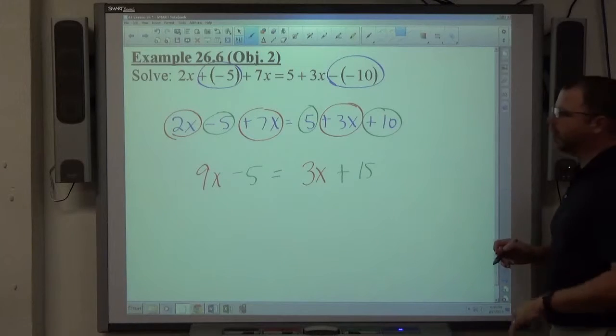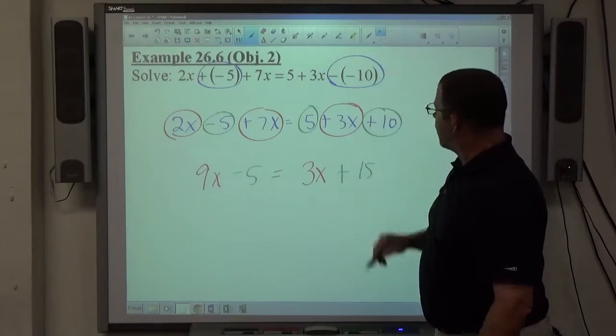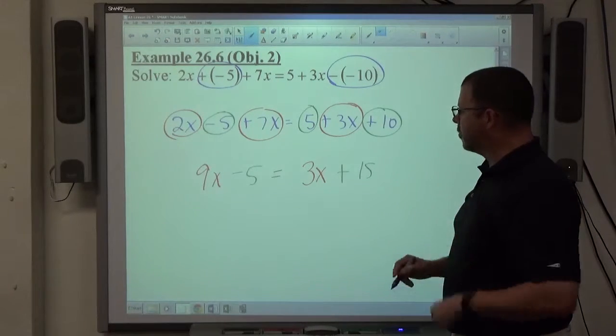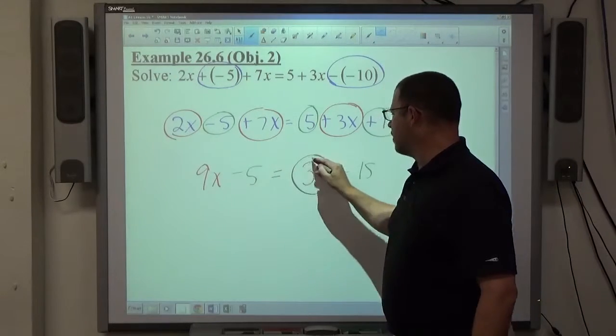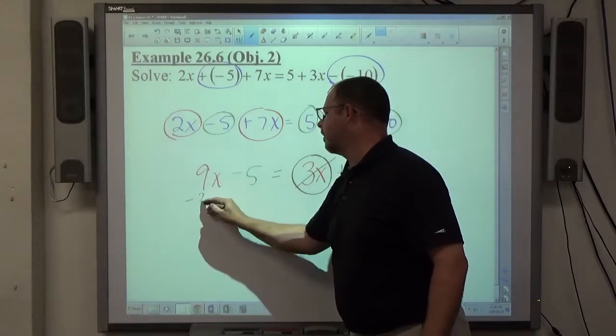It's the simplest I can get both sides. At this point, I would decide to move my x term. Since 3 is smaller than 9, I move 3x over here to the left-hand side.